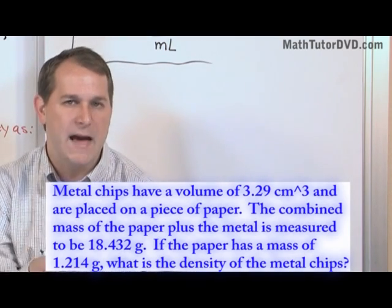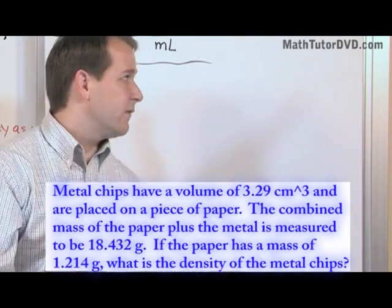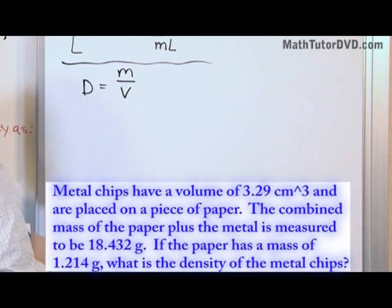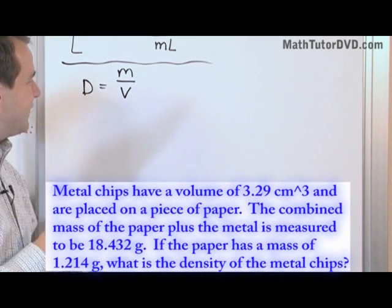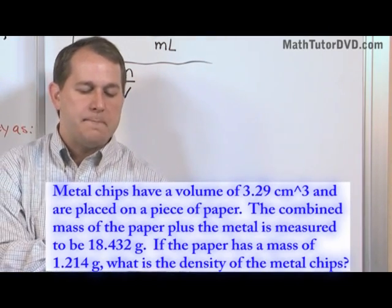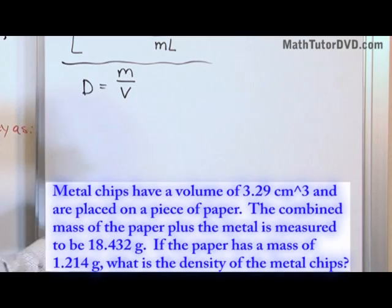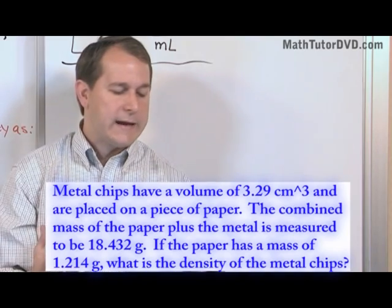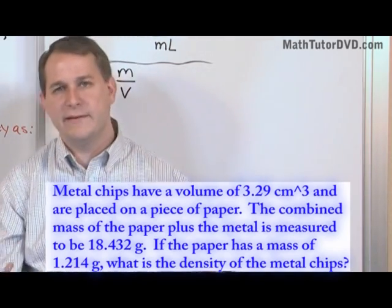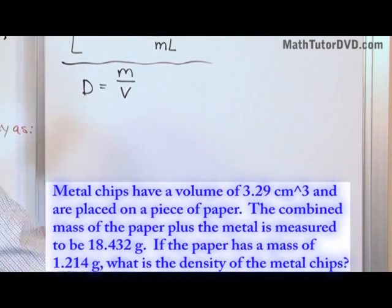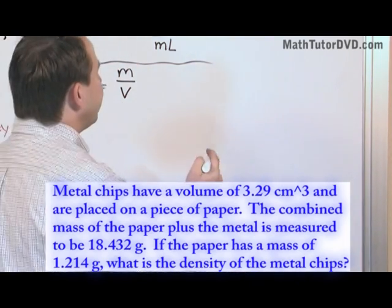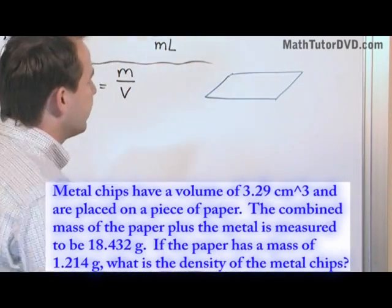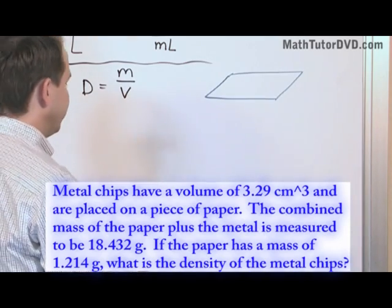We want to calculate the density of that metal. The density will be the mass of the metal divided by the volume it occupies. We know the volume of the metal chips — 3.29 cubic centimeters. But we don't know the mass directly because we put it on a piece of paper, so we have to do a little work. If you're not sure what to do, I suggest always drawing a picture — a picture is incredibly important in chemistry, physics, and almost all branches of math and science.